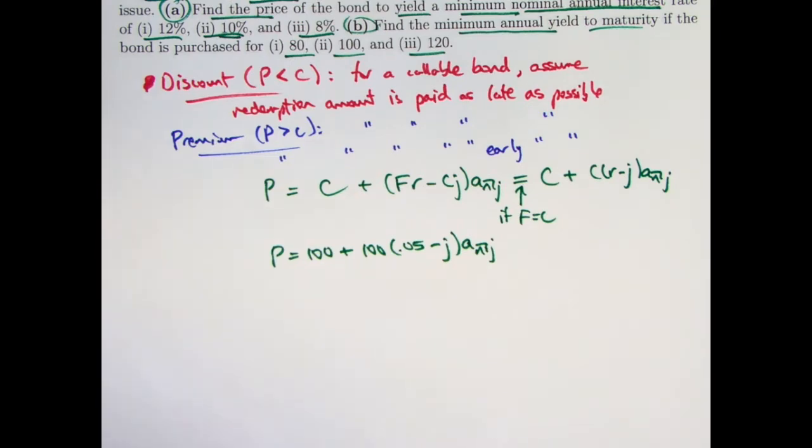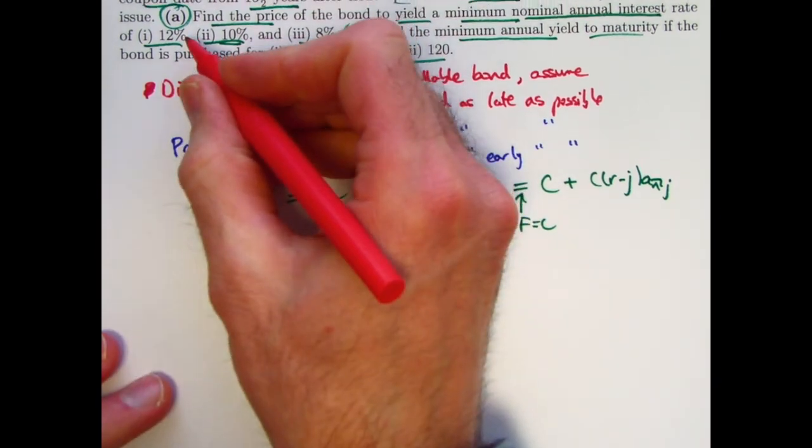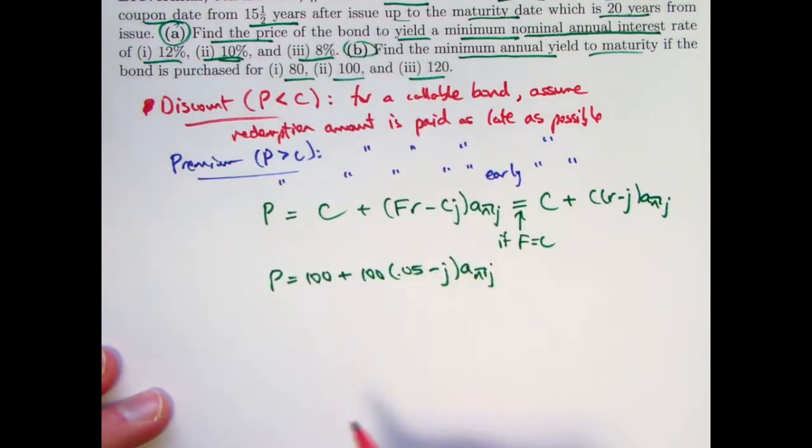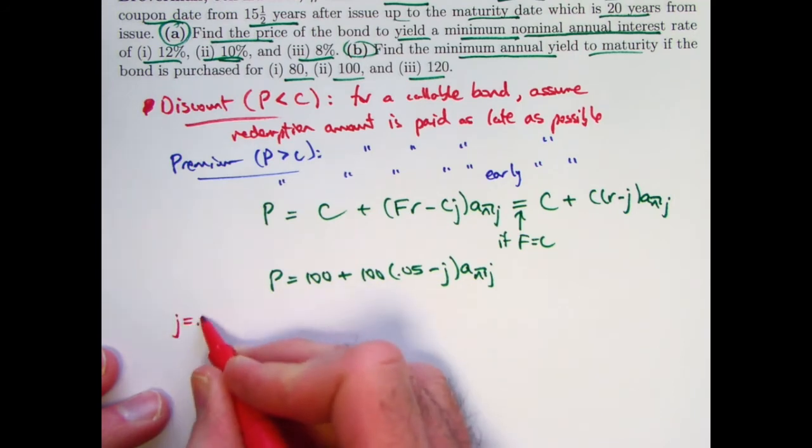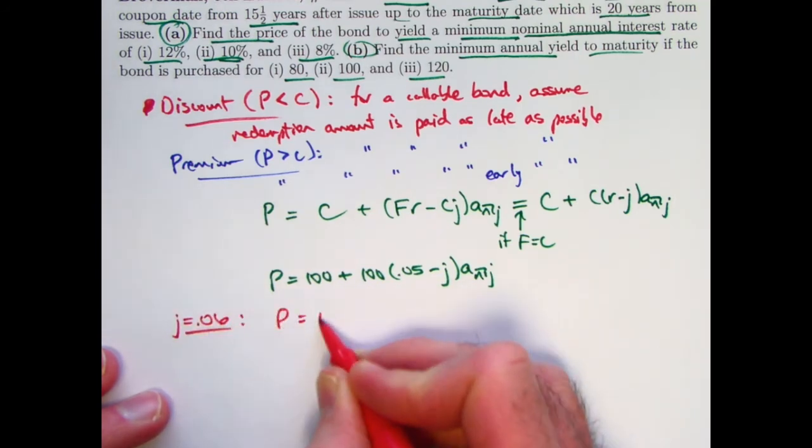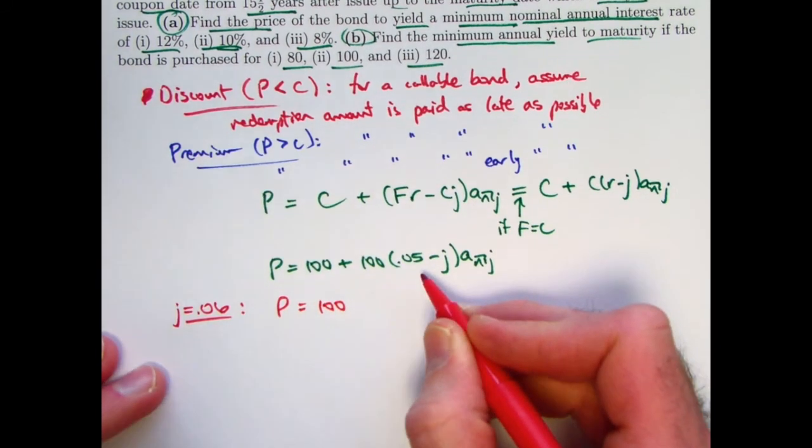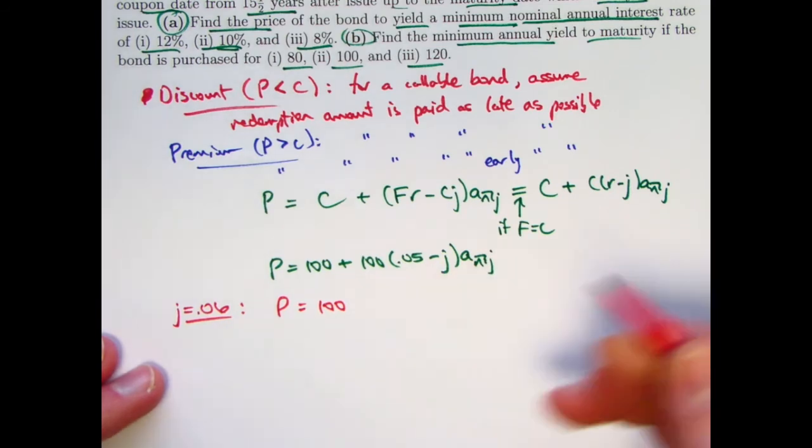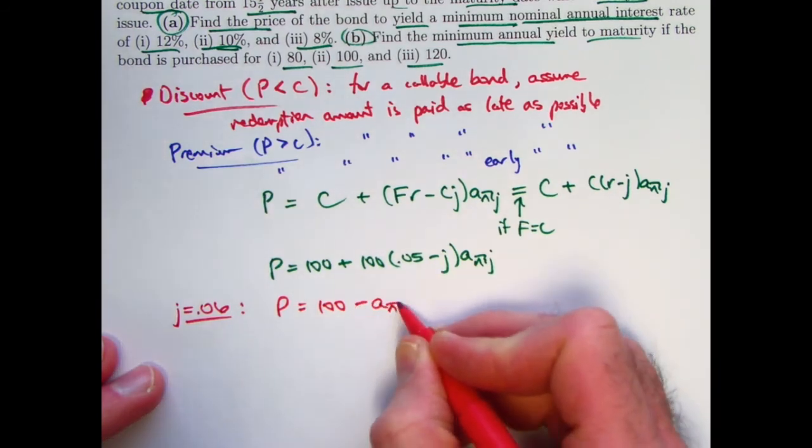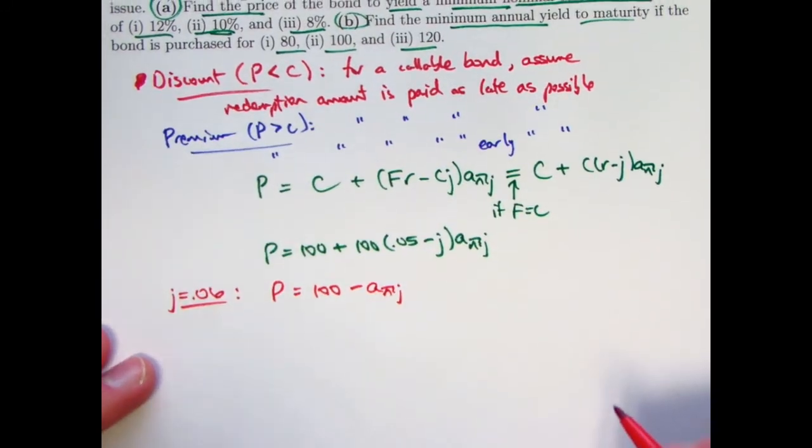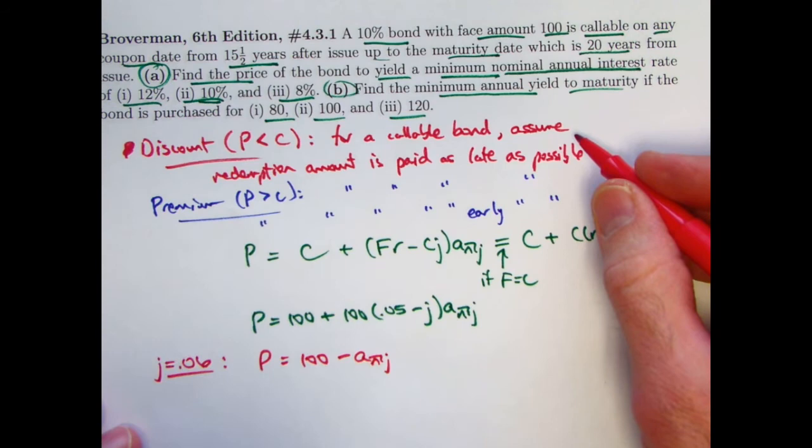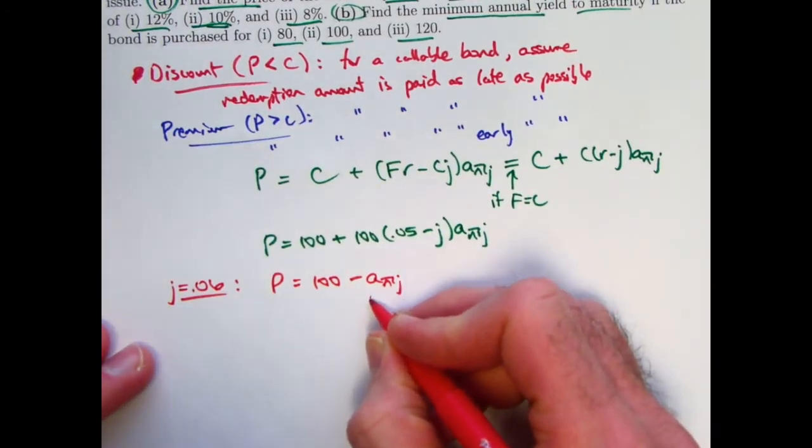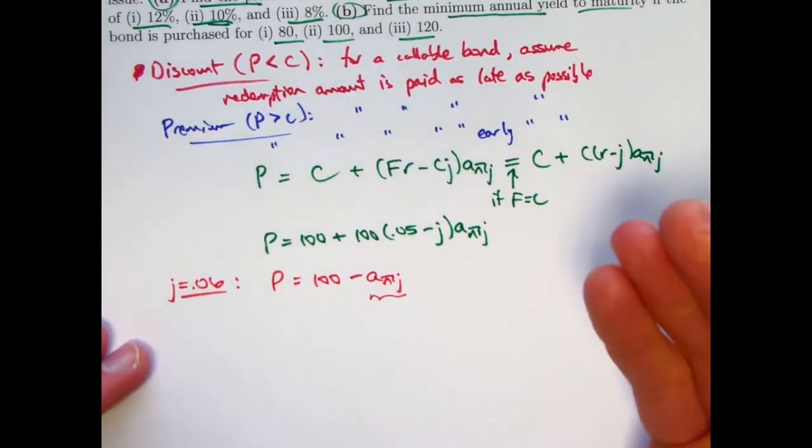So we can simplify the formula a little bit to that. Now let's go ahead and think about these cases. First case, when the nominal annual rate is 12%, so the effective semi-annual yield rate, j is 6%, 0.06. If j is 0.06, then you're going to get 0.05 minus 0.06 here, negative 0.01, times 100 is negative 1. We get 100 minus a n j. And we're going to plug in, because we're in the discount case, the largest possible value of n, n equals 40 here.